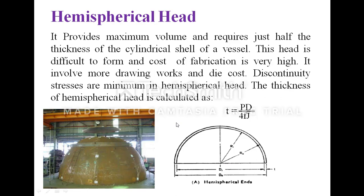Elliptical heads are used for vessels operating above 15 kg per cm². The hemispherical head provides maximum volume and requires just half the thickness of the cylindrical shell of the vessel. However, it is difficult to form and the cost of fabrication is very high. It involves more drawing work and die cost. Discontinuity stresses are minimum in a hemispherical head. The thickness is calculated by t = p·D / (4·f·j).